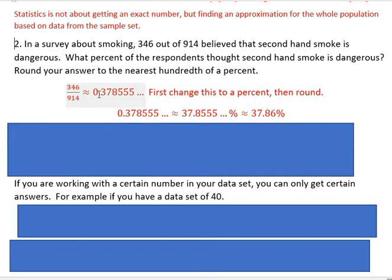How do you change to a percent? You multiply by 100 and move the decimal place over two places. Now we have 37.8555 and it continues as a percent. So now we can round that. It's approximately 37.86%. How does the rounding work? Look one place to the right, and if the number is 5 or greater, we increase the number to the left of it.